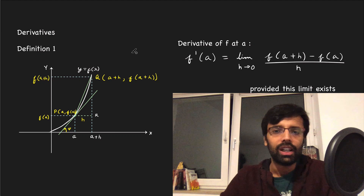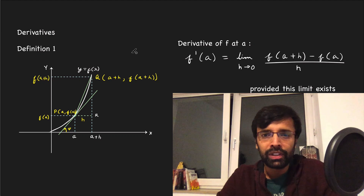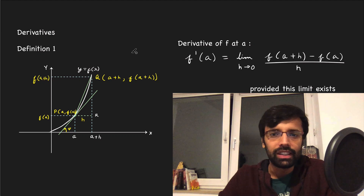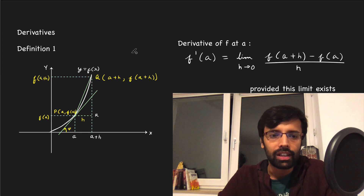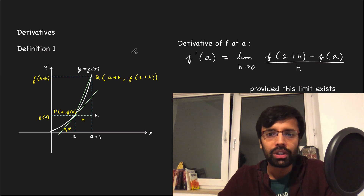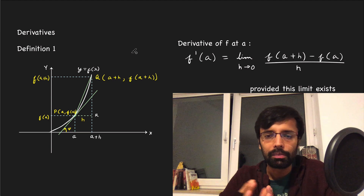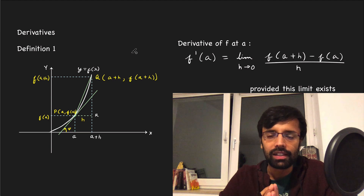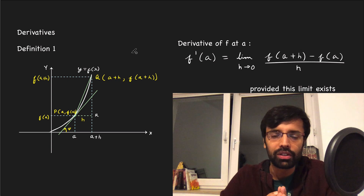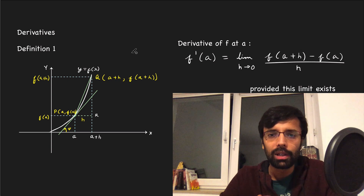Hello friends. Application of Derivative is one of the easiest and scoring topics with respect to JEE Mains. From this topic, there are almost two questions in each paper. The topics are divided in two parts: one is equation of tangent, equation of normal, rate of change of quantity; and the other one is maxima, minima, and critical points.